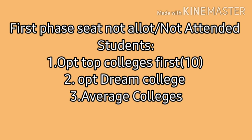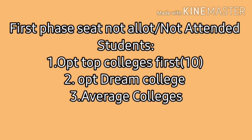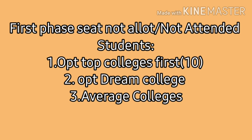Now for students who did not get a seat in phase one or did not attend TSMC 2020 first phase counseling — while opting web options in final phase counseling, first opt the top 10 colleges, then your dream college, and after that some average colleges. In second or final phase counseling, you should opt a minimum of 30 to 35 colleges to get a seat in TSMC 2020 final phase.